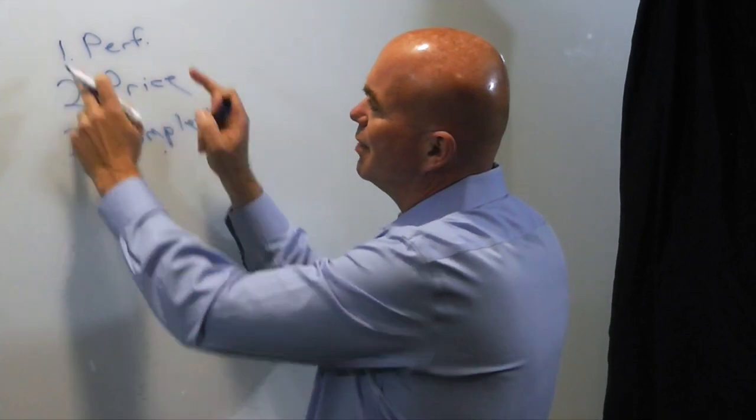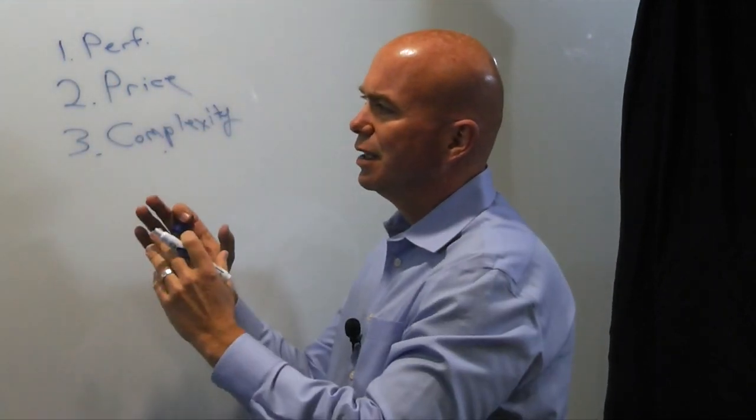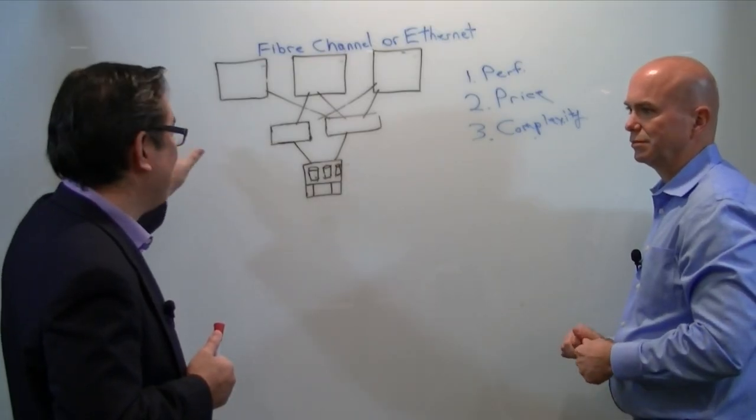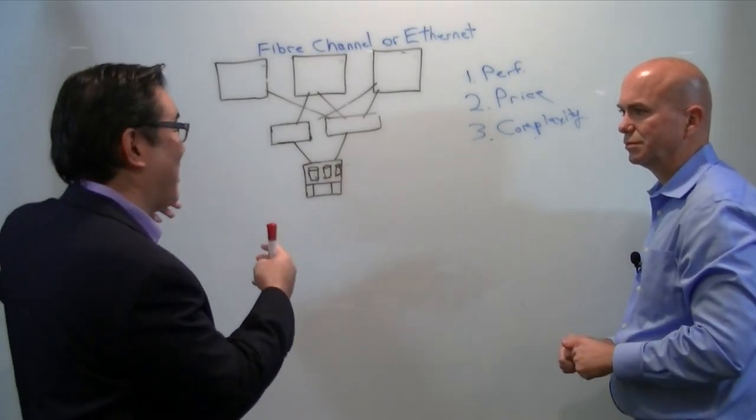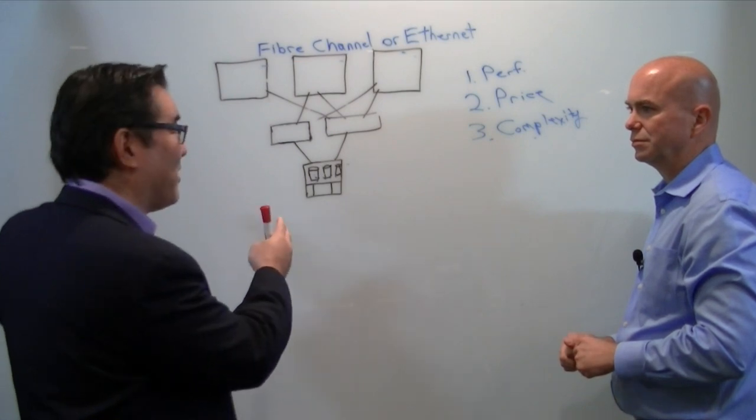First, let's talk about performance. Is Ethernet faster than fiber channel? Ethernet has speeds today of 1, 10, 40, 100. Fiber channel being deployed today, 16 gigs. So when you compare the fastest commonly deployed speed, you're really comparing 10 to 16. Is there an advantage there? No.